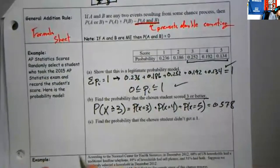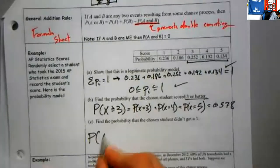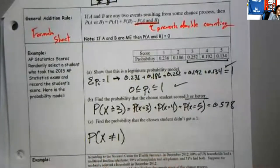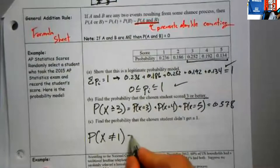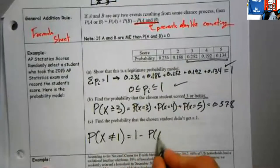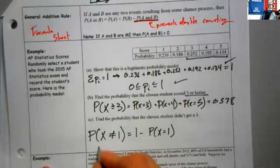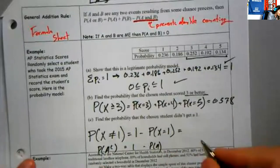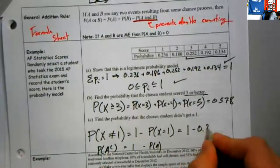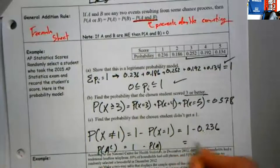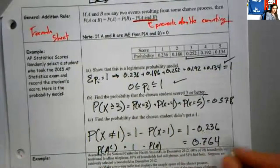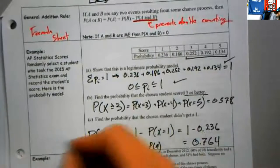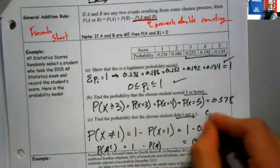And then part C asks: find the probability that the chosen student didn't get a 1. The probability they didn't get a 1 is 1 minus the probability they did get a 1 — that's the complement rule. The probability of A not happening is 1 minus the probability of A happening. So I could add up 2, 3, 4, 5, but it would be a lot easier to just subtract away 0.236 to get an answer of 0.764. That is the complement.